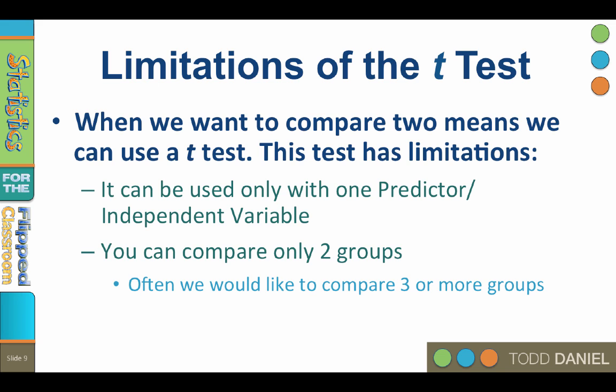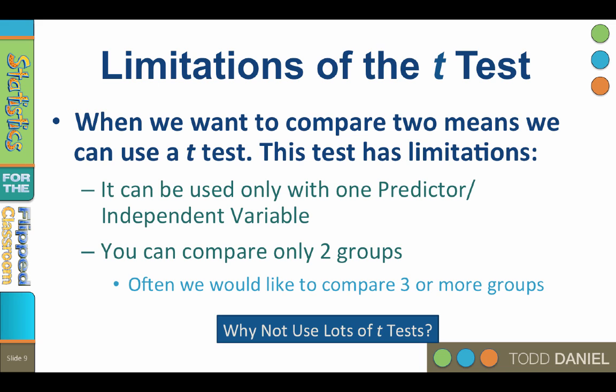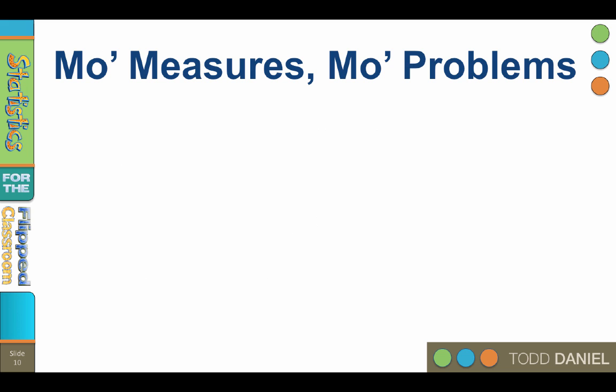Often we would like to compare means from three or more groups. But then again, if we want to compare three means, why not just use three t-tests? And here's where the problem comes in. We cannot use multiple t-tests because using multiple tests on the same data causes the alpha level to skyrocket. This means that we are more likely to make type one errors, or to find erroneously statistically significant results where no result truly exists.